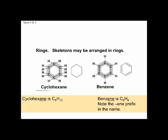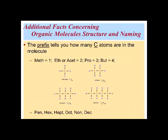The prefix tells you how many carbon atoms are in the molecule: meth is 1, eth is 2, pro is 3, but is 4. So you can see methane, ethane, propane, and butane. Continuing to pentane, hexane, heptane, octane, nonane, and decane, we have described molecules all the way up to having 10 carbons in a hydrocarbon molecule.